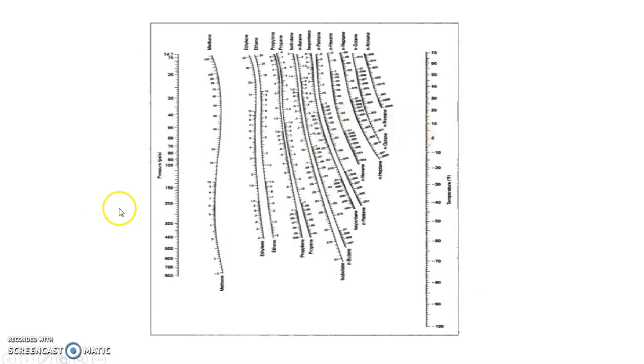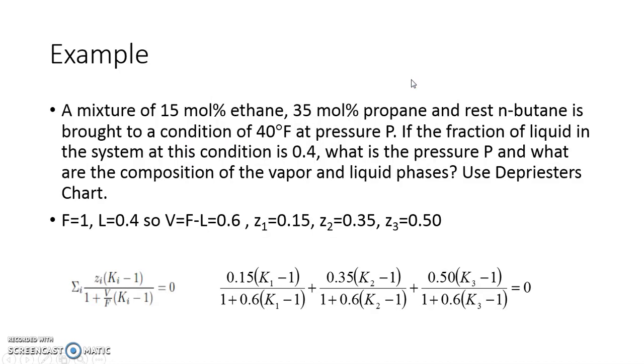Since you know temperature and pressure both, you have to just draw one line, and this line will give you K1, K2, K3. Substitute that K1, K2, K3 here directly.